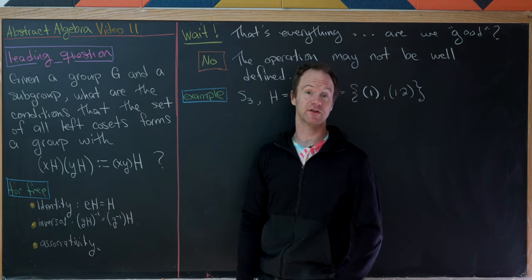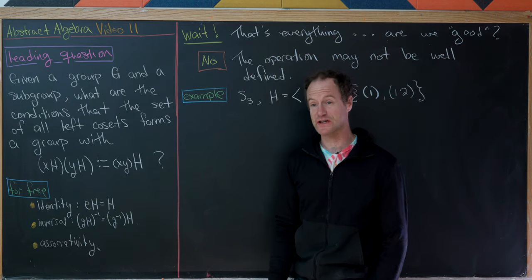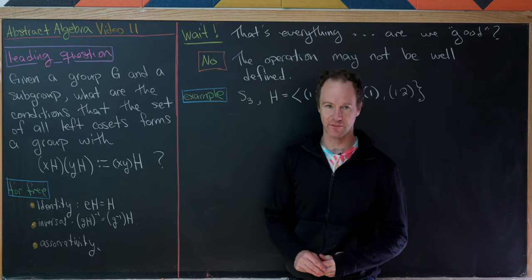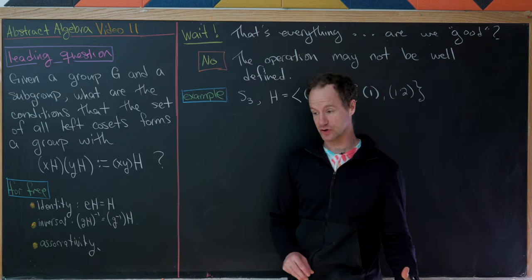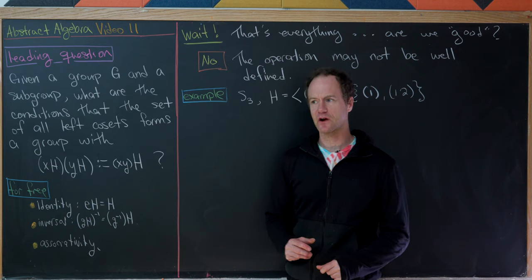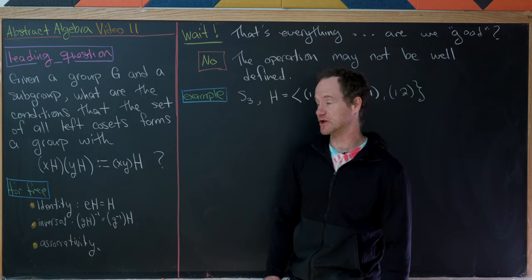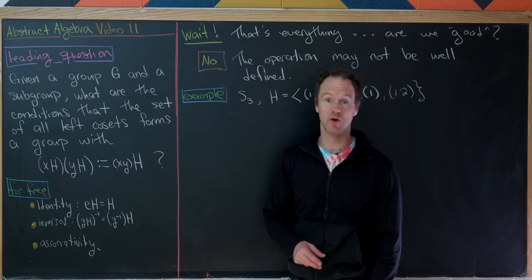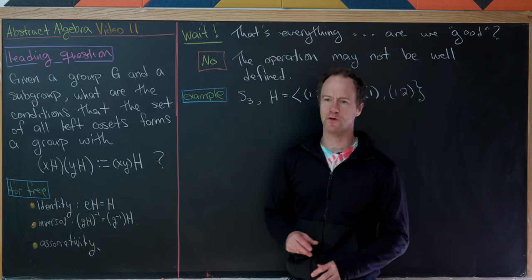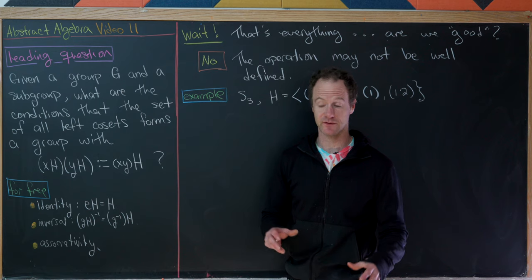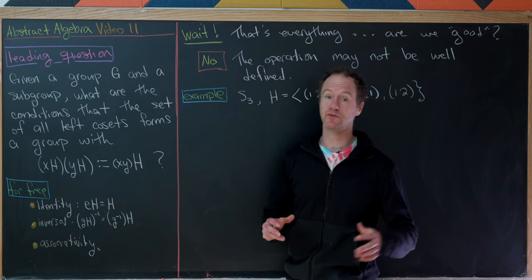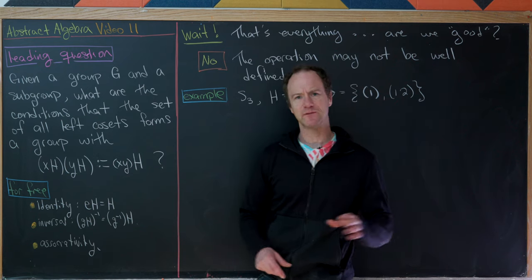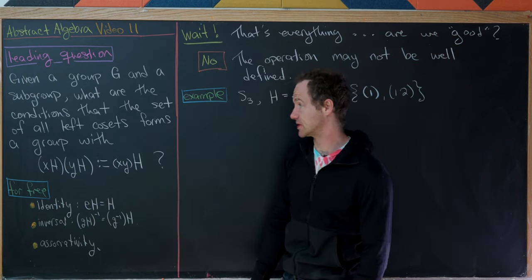This is the 11th video in our series on abstract algebra, and today we're going to talk about a very important type of group known as a quotient group. But in order to get there, I'd like to motivate the situation. Maybe recall that before we talked about cosets and exactly what those were, and we did lots of examples. So we're taking an assumption of familiarity with cosets here. So here's our leading question.